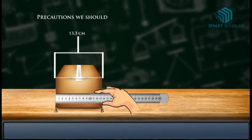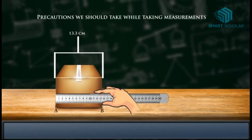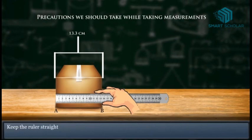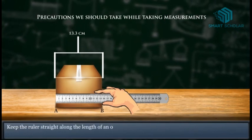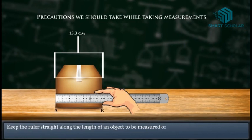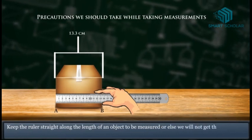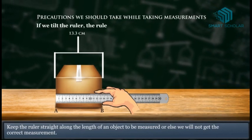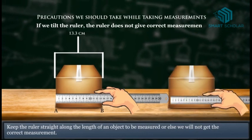Precautions we should take while measuring length: Keep the ruler straight along the length of an object to be measured. Otherwise, we will not get the correct measurement as shown in the diagram. If we tilt the ruler, the ruler does not give correct measurement.